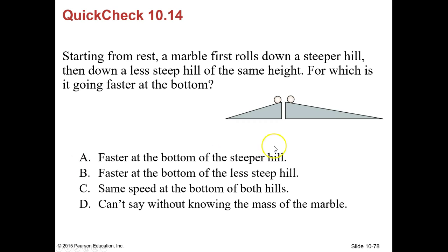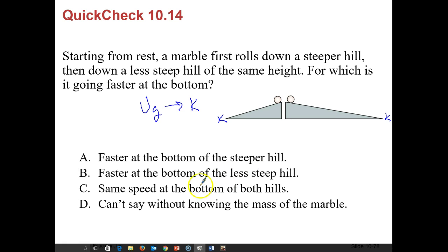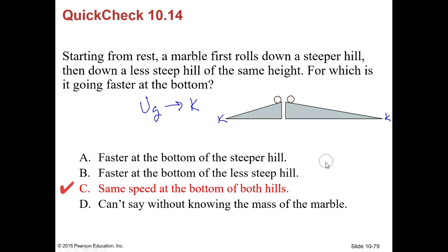Quick check 10.14: starting from rest, a marble rolls down a steeper hill, then down a less steep hill of the same height. For which is it going faster at the bottom? Since both hills have the same height, both marbles have the same gravitational PE at the top, which converts to the same kinetic energy at the bottom. They have the same speed — ignoring rotational motion and friction.